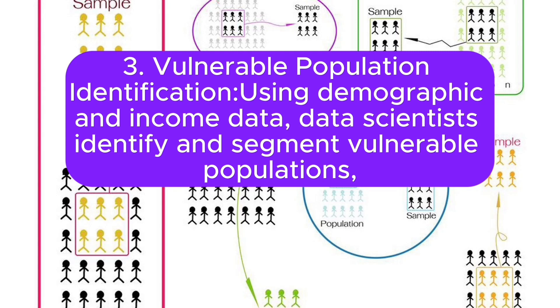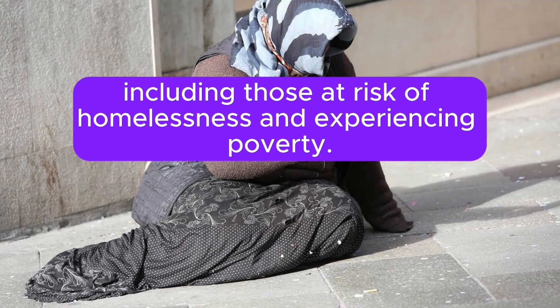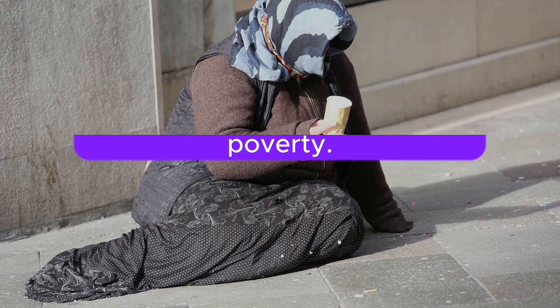Vulnerable Population Identification. Using demographic and income data, data scientists identify and segment vulnerable populations, including those at risk of homelessness and experiencing poverty.